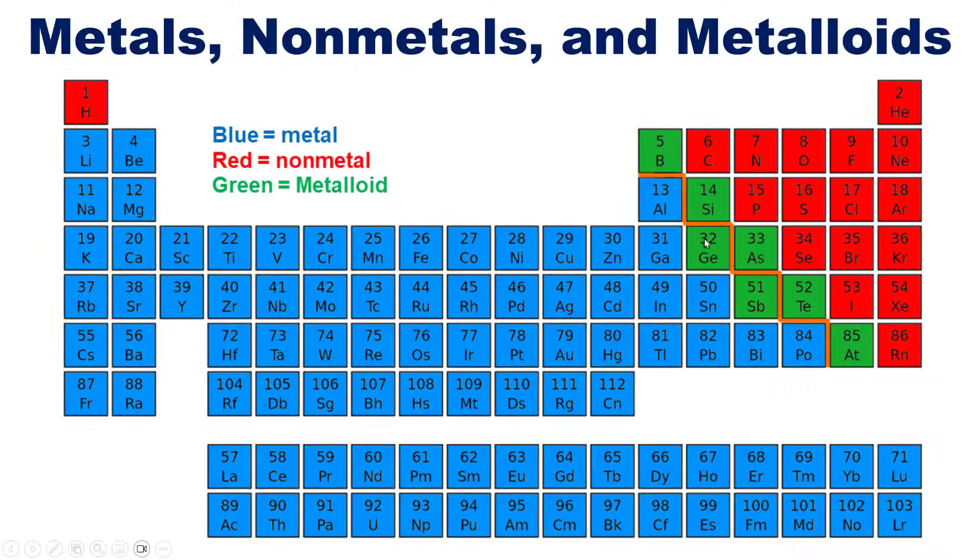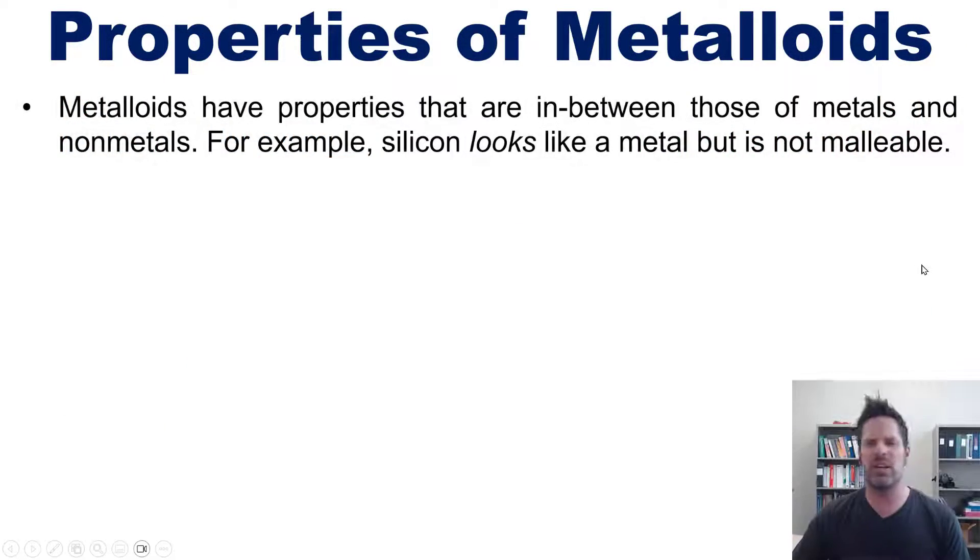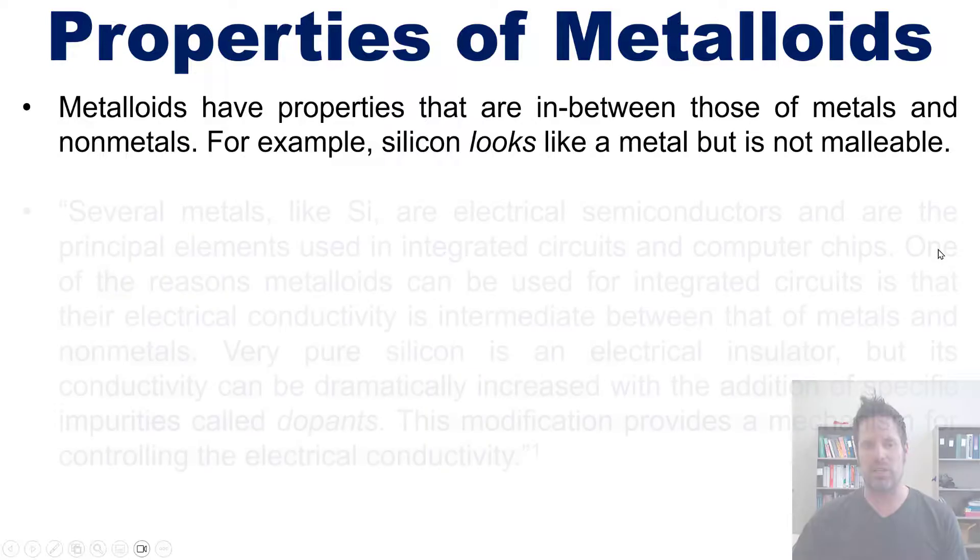We end then with metalloids. Metalloids, of course, which are this small sliver of elements shown right here in green, have properties that are in between those of metals and nonmetals. For example, silicon looks shiny like a metal, but it is not malleable. So it can't be pounded into a plate or drawn into wire. It actually kind of crumbles more like a nonmetal.